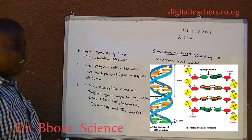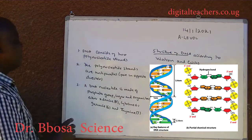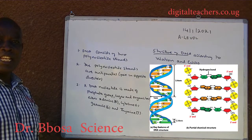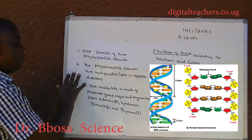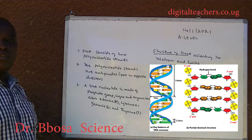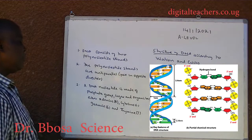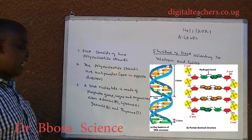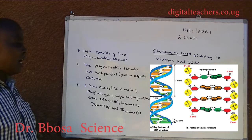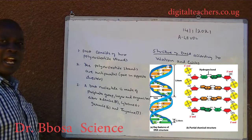The structure of DNA according to Watson and Crick. One, DNA consists of two polynucleotide strands. Two, the polynucleotide strands are anti-parallel, facing in opposite directions. Three, a DNA nucleotide is made of a phosphate group, sugar, and an organic base — either adenine (A), cytosine (C),